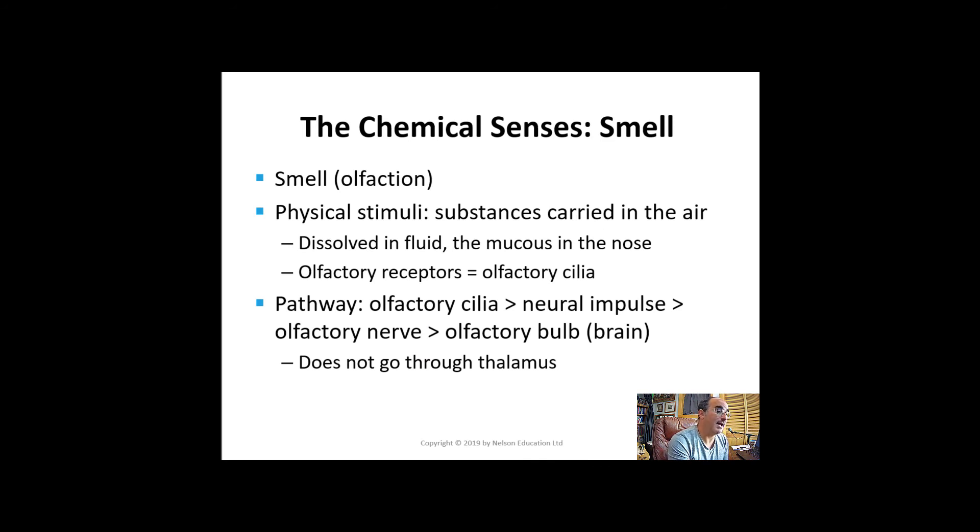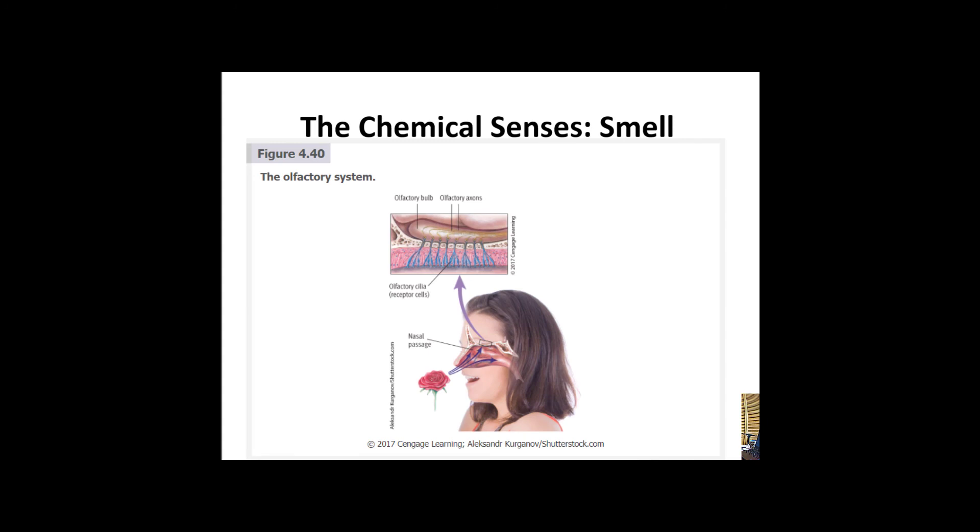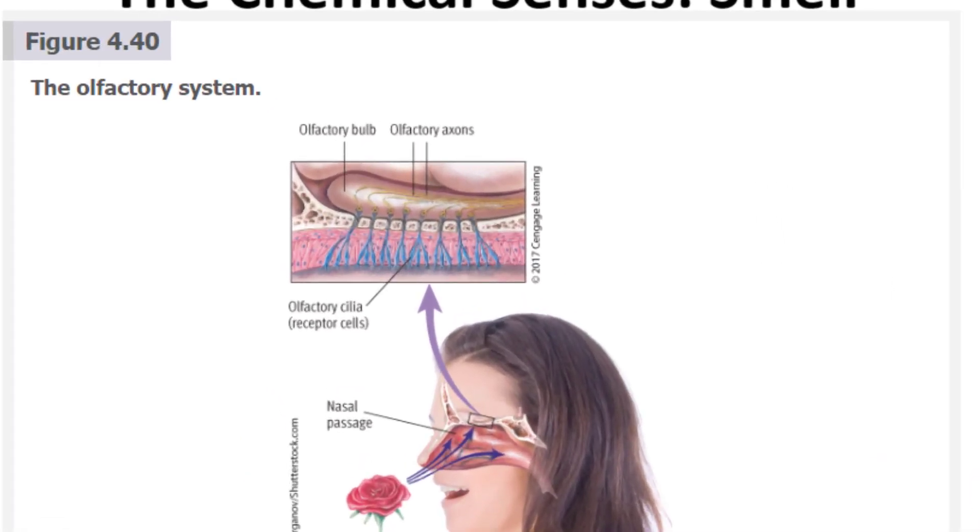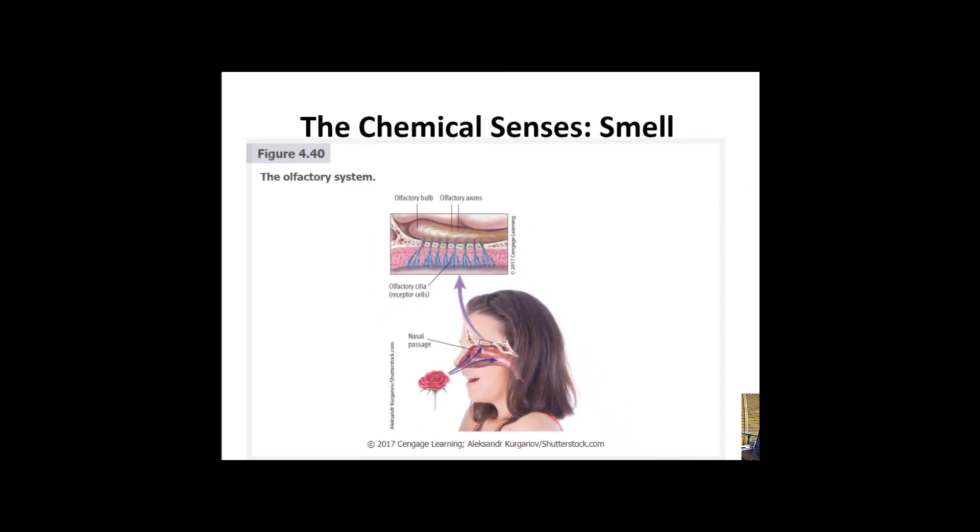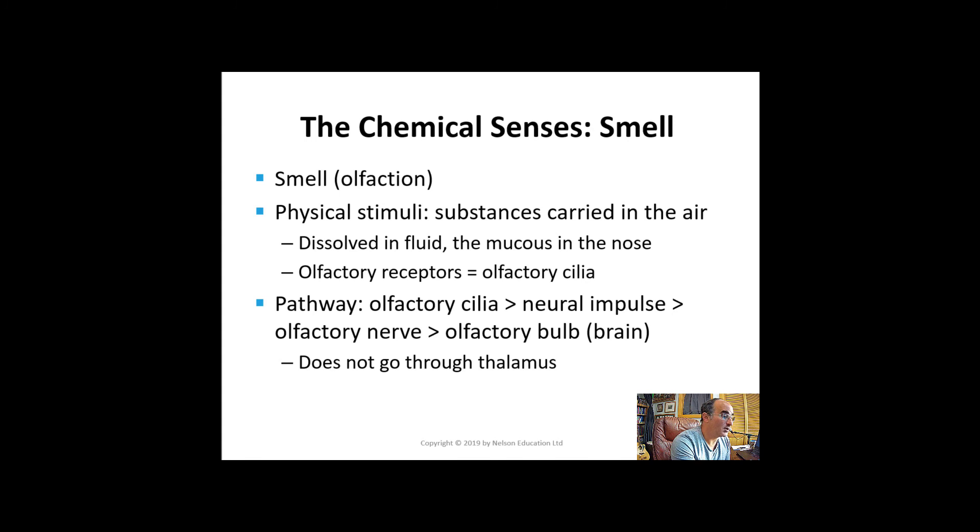Smell, which we call olfaction, operates much like the sense of taste. The physical stimuli are chemical substances carried in the air that are dissolved in fluid, the mucus in the nose. Olfactory receptors are called olfactory cilia and are located in the upper portion of the nasal passages. The olfactory receptors synapse directly with the cells in the olfactory bulb at the base of the brain. Olfaction is the only sense therefore that is not routed through the thalamus. Odors are not easily classified. The primary odors have not really been delineated. Humans can distinguish about 10,000 odors but for some reason have a hard time attaching names to odors quite frequently.